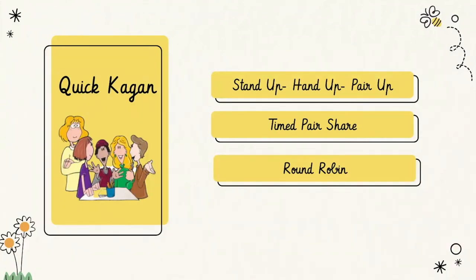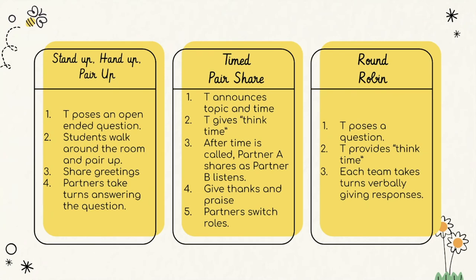Next up on our Teacher Choice Board, we have what I call Quick Kagan — quick, easy, anybody-can-do-it collaborative structures for your classroom. The three I'm going to suggest are Stand Up Hand Up Pair Up, Timed Pair Share, and Round Robin. Each of these strategies gets students talking with their peers about their learning. Collaboration equals engagement. Using Kagan in your classroom helps ensure positive classroom culture, higher-order thinking skills, real-life collaboration, opportunities for conferencing, and a balance of online and offline learning.